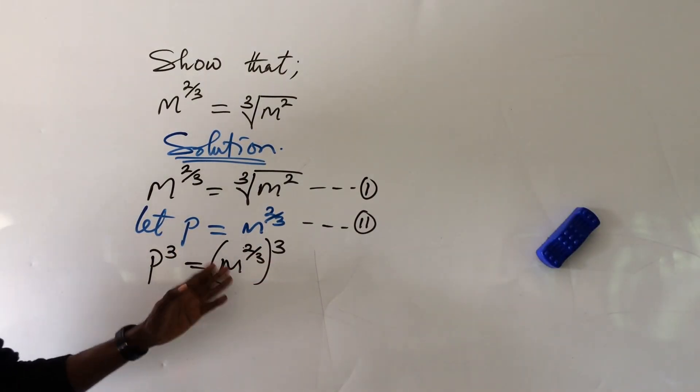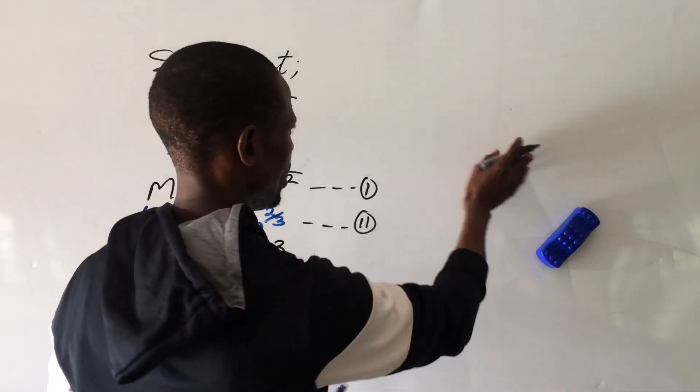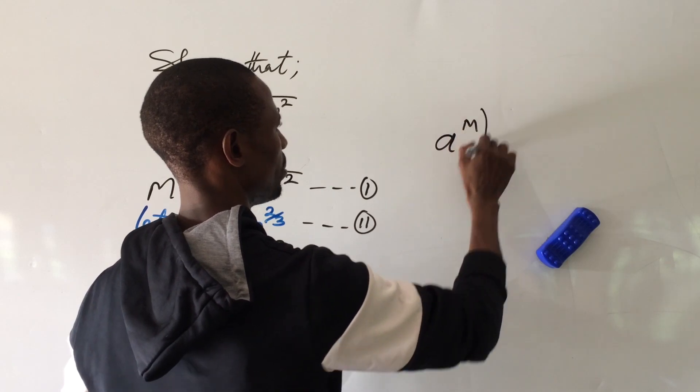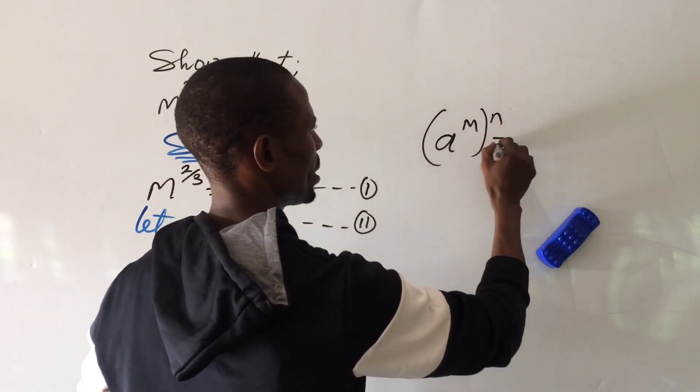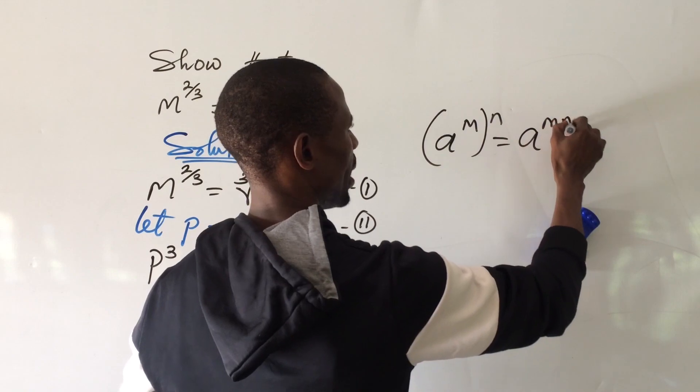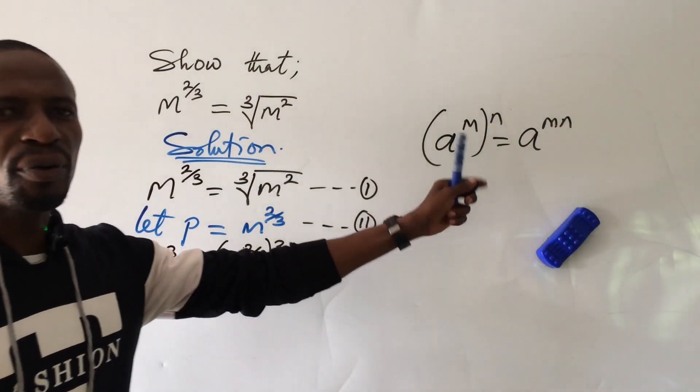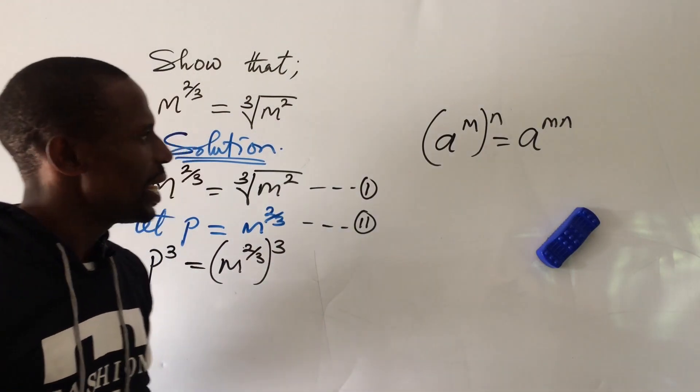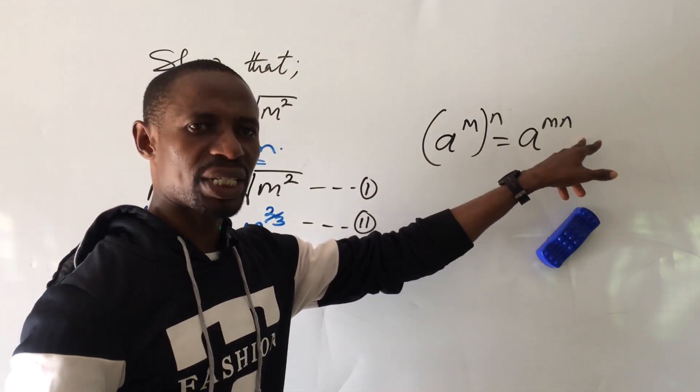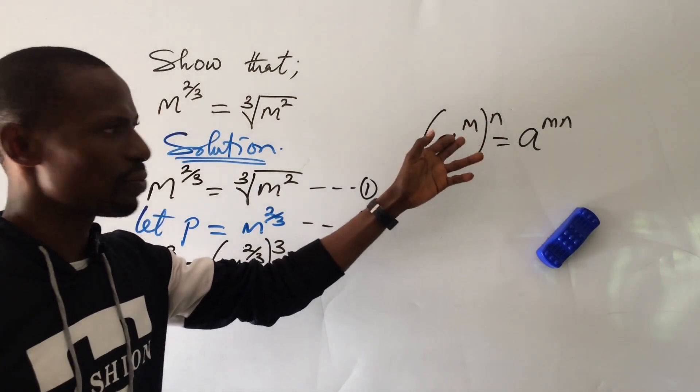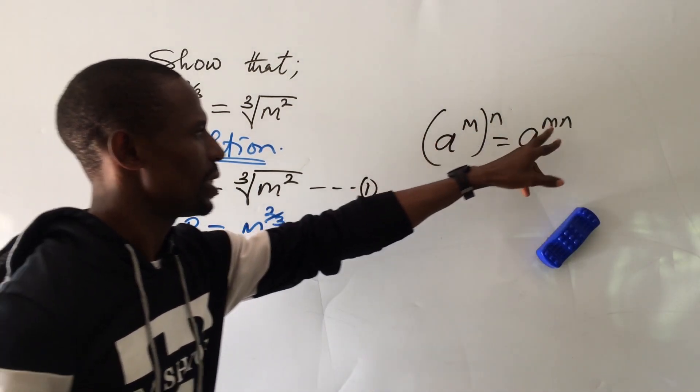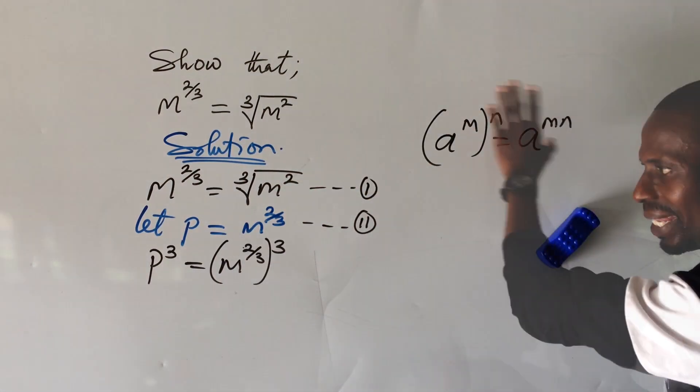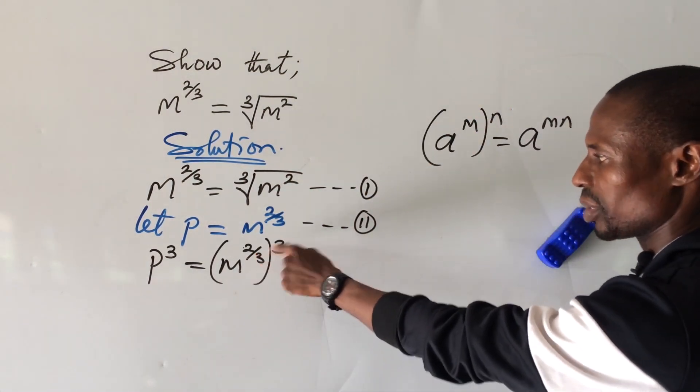With this, there is a law in indices which says that if you have a to the power of m bracket n, this is equal to a to the power of mn. Provided m and a are positive real numbers. If m and a are not positive real numbers, this will not work. So the only condition for this to work is that m and a must be positive real numbers. So apply this. What will happen to this? We multiply the exponent.